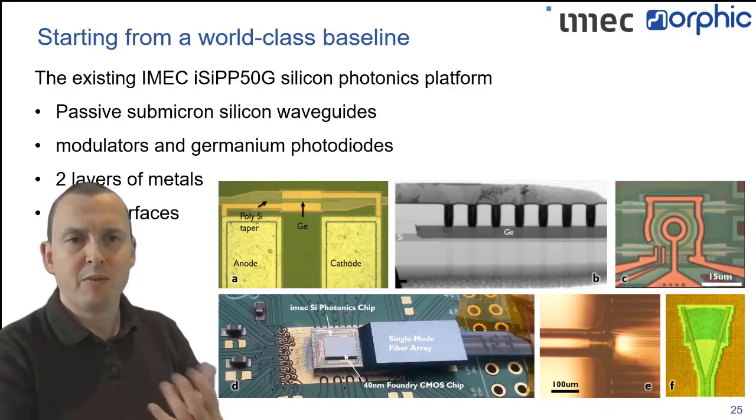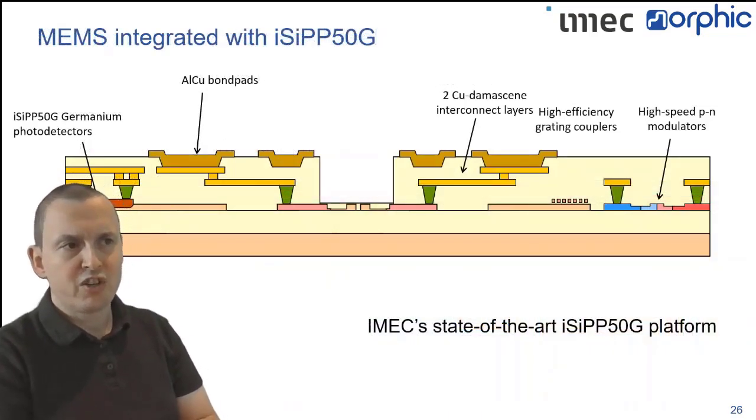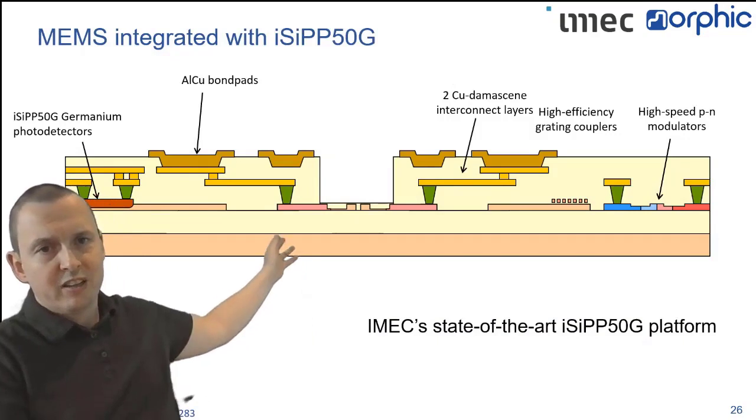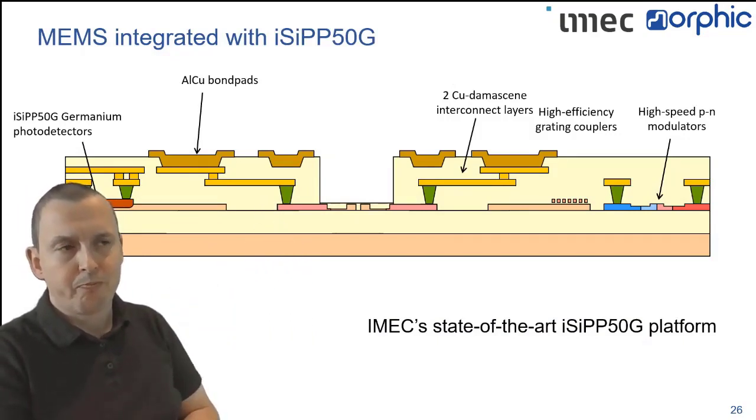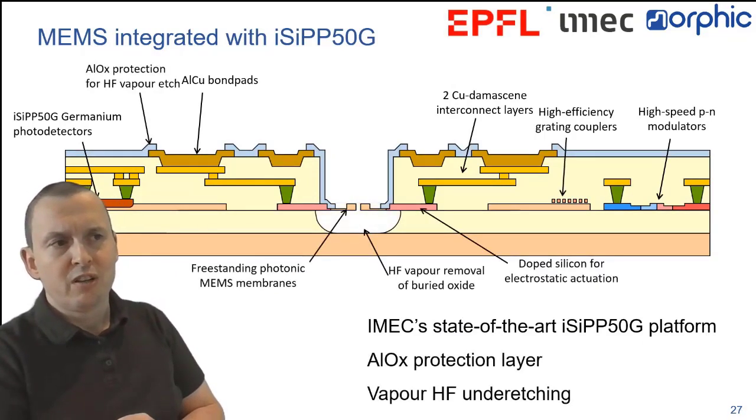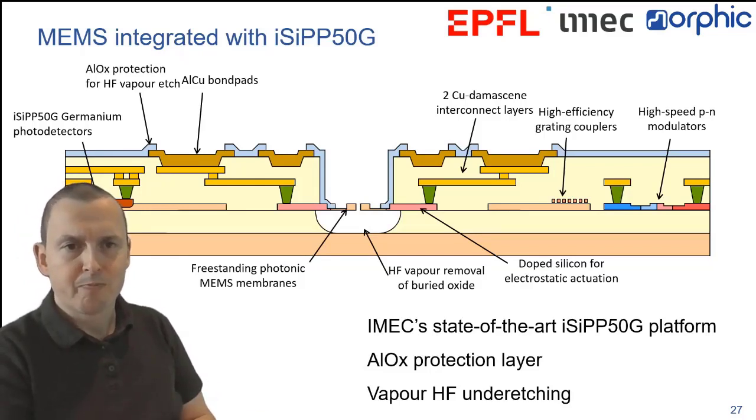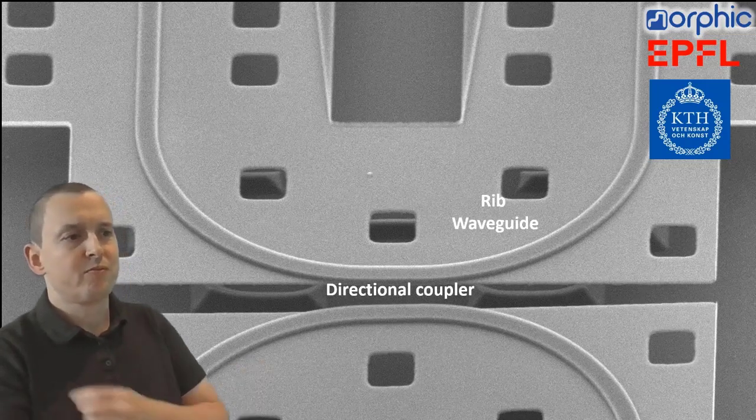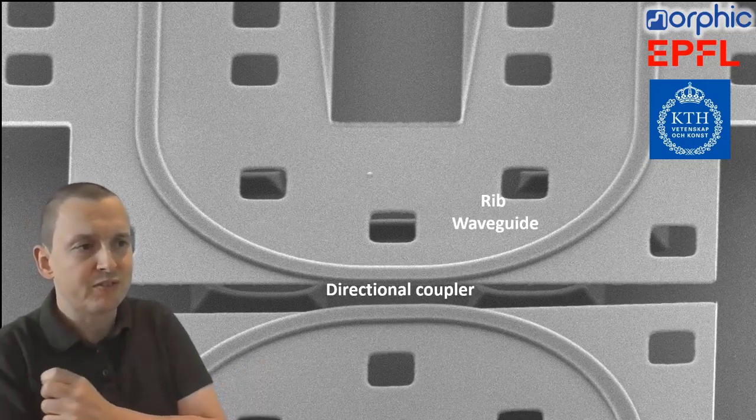Now, the question is how to get these MEMS in there, because a typical silicon photonics platform isn't just waveguides. It has metal layers to electrically connect all the electro-optic devices. So, if you look at a cross-section, the IC50G platform has one key feature. It has a well that can be etched in the dielectric layer to access the waveguides. This is, for instance, useful for sensors. Now, in Morphic, we use this well, with some alumina protection on the rest of the chip, to undercut locally the silicon photonics and essentially make freestanding waveguides.